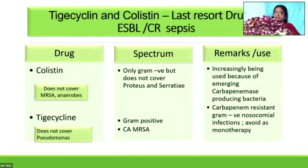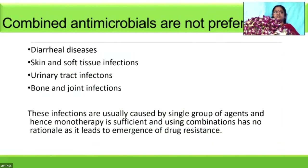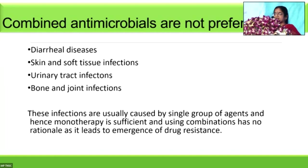Combination antimicrobials are not preferred in diarrheal diseases, skin and soft tissue infections, urinary tract infections, and bone and joint infections — because these infections are usually caused by a single group of agents, hence monotherapy is sufficient. Using combination therapy in these conditions has no rationale and leads to emergence of drug resistance.